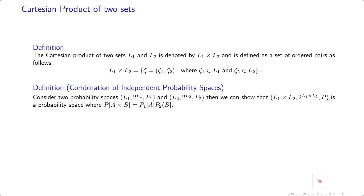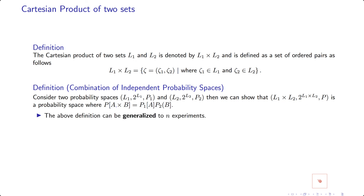If you have independent probability spaces, consider for simplicity: L1 with its power set as sigma algebra, P1 as your probability measure over L1, and P2 as the probability measure over the second space. Then we can define the Cartesian product space, the power set sigma algebra, and a probability measure P such that the probability of any event equals the product of the individual probabilities. You can show that this combined experiment satisfies all the properties of a probability measure. This definition can be generalized to n different experiments and n different probability spaces using the Cartesian product, and it can also be applied when you repeat one trial multiple times.